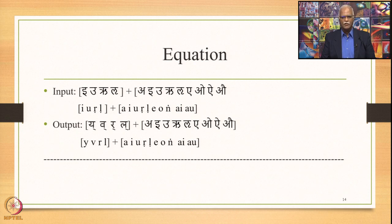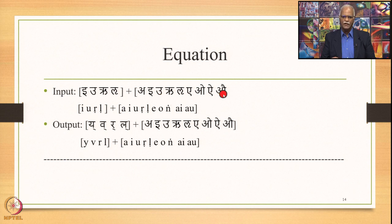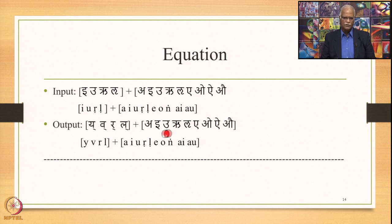The same meaning can be put in equation form. The input consists of one of E, U, Ru, Lu plus one of A, E, U, Ru, Lu, A, O, I and Au. So eventually E, U, Ru, Lu get substituted by Y, V, R and L respectively.